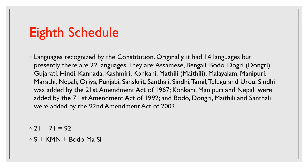The eighth schedule lists 22 languages recognized by the constitution. Originally there were 14 languages, and more were added over time. Through the 21st Amendment Act, Sindhi was added. Through the 71st Amendment Act, Konkani, Manipuri and Nepali were added. Through the 92nd Amendment Act, Bodo, Maithili, Santali and Dogri were added. The trick to remember this is: 21 plus 71 equals 92, and the languages are S (Sindhi), KMN (Konkani, Manipuri, Nepali), and BDMS — Bodo, Dogri, Maithili, Santali.